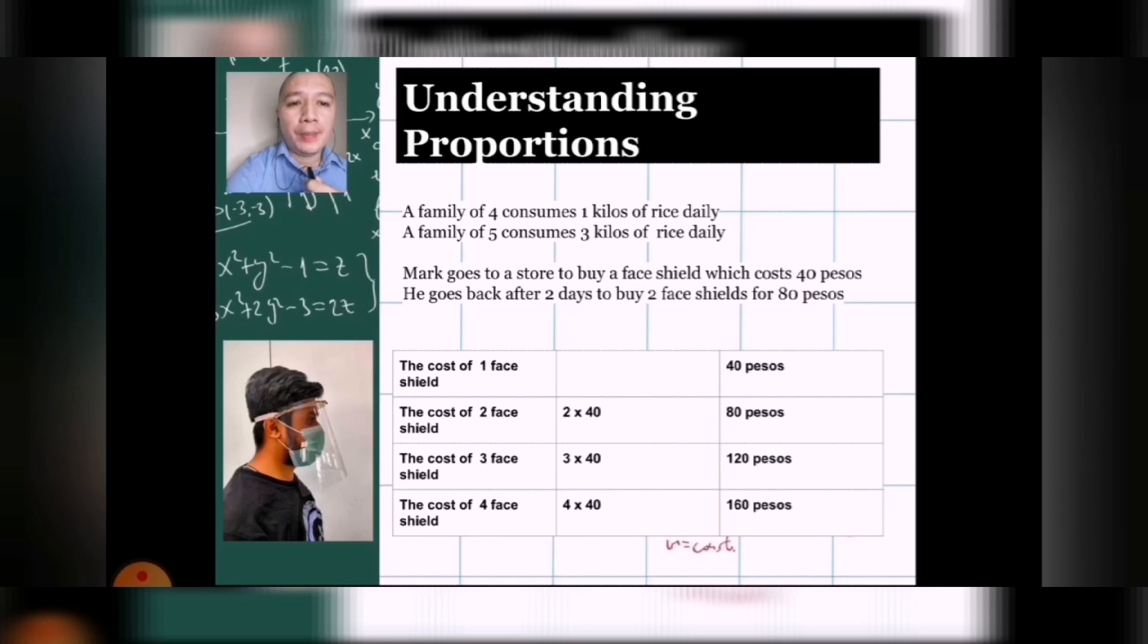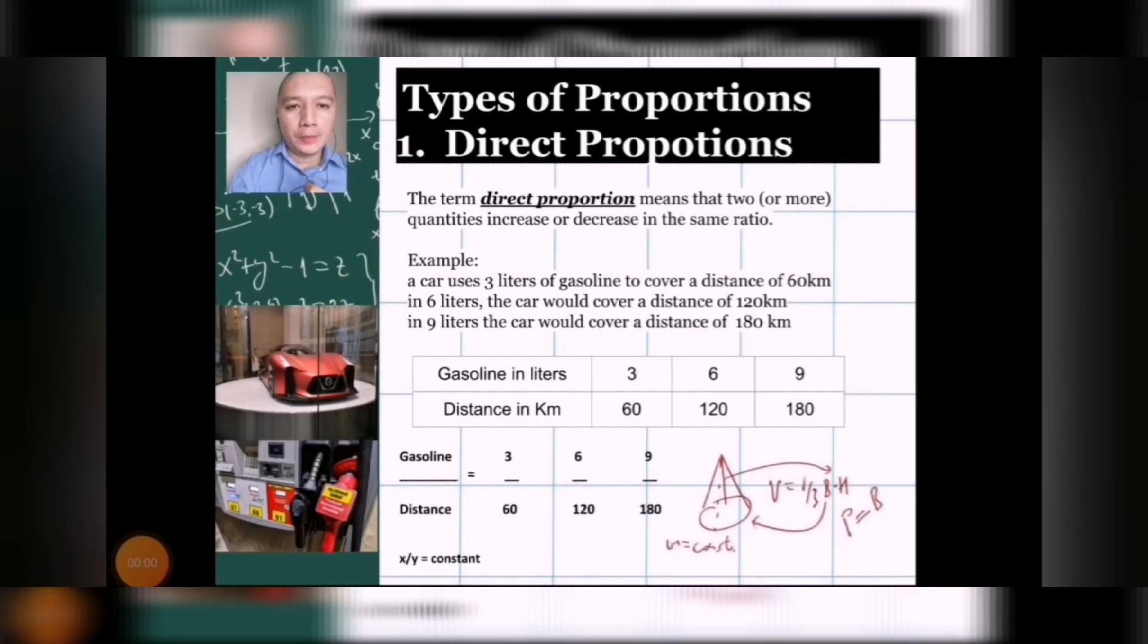One face shield would cost 40 pesos. Two face shields would cost 80 pesos. Three face shields would cost 120 pesos. And four face shields would cost 160 pesos. What we're trying to show here is that the more quantities we buy, the more we would have to spend. This example helps us to understand that in proportions, there is a relationship. And the relationship would vary depending on the type of proportion we are talking about.